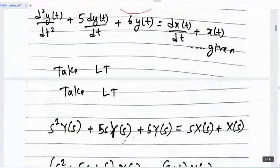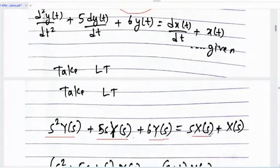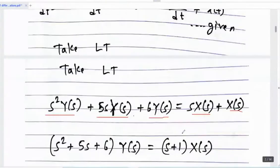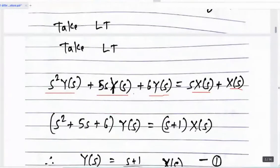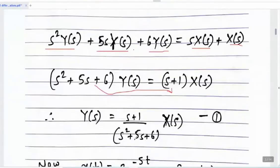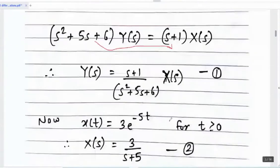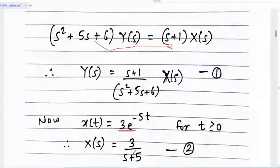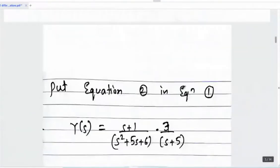Y(s) is common, X(s) is common — take outside the bracket. Then bring this term over here. So Y(s) = (s+1) / (s² + 5s + 6) · X(s). After that, x(t) is given as 3e^(-5t), so X(s) = 3/(s+5). Use equation 2 in equation 1. So up to this we have the expression.